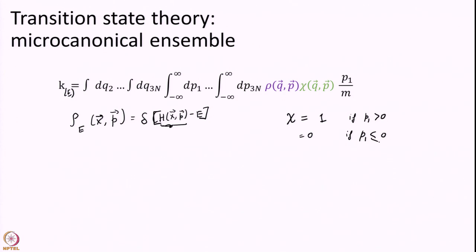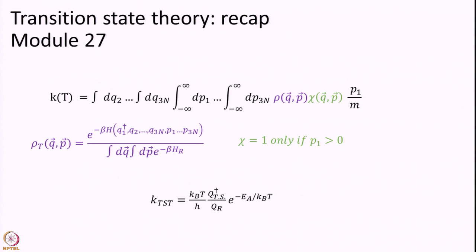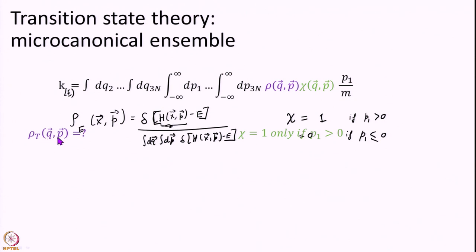That is our starting point — this is the expression we want to simplify. We have changed our density from a temperature density to an energy density. I had made a mistake: this should be normalized. Even in the previous expression, rho_T was normalized with a full integral, so we must write a similar normalization here. That integral is dq dp delta of H(x,p) minus E, constraining those x and p points for which the Hamiltonian takes value E.